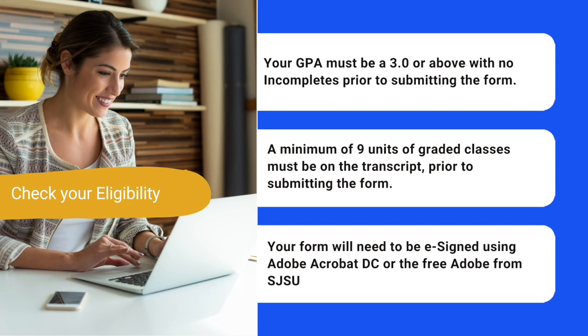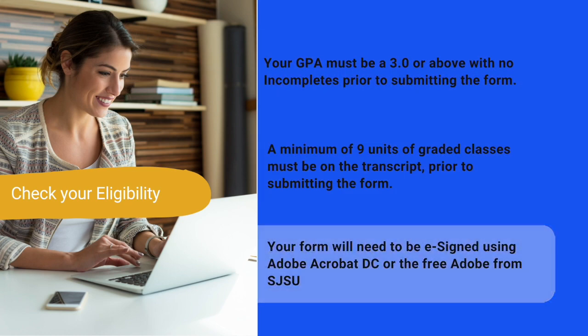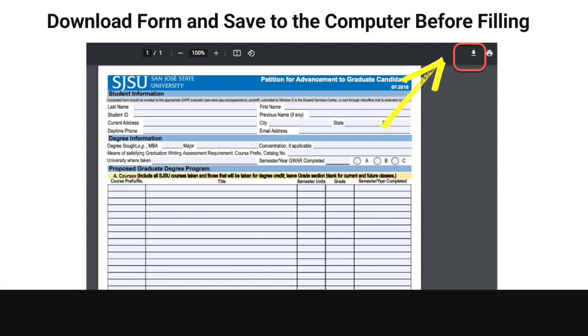Your form will need to be eSigned. Follow the instructions to use an electronic signature on your form by either downloading the free version of Adobe Acrobat Reader DC or using the SJSU free Adobe software provided by eCampus. Make sure to download and save the PDF to your computer and open the file from your computer.